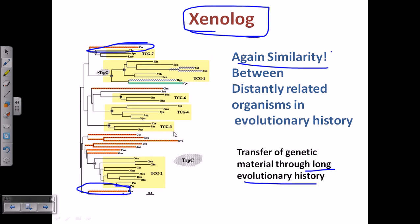So homolog, ortholog, analog, and xenolog — all of them are about similarities but in different ways. That's it, and I hope that's helpful. Thank you.